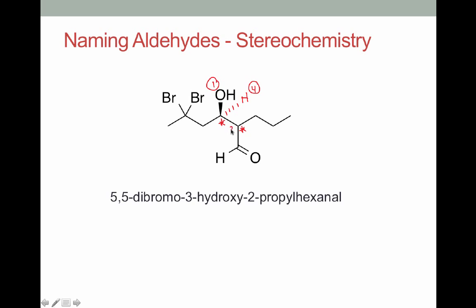We have this carbon versus that carbon. The carbon that has two carbons attached we'll make priority two, and the carbon that has one carbon attached we'll make priority three. With our priority four group pointed back, we draw our arrow from one to two to three — we're going around to the right, so that's R configuration. That's carbon three, and since there is more than one chiral center, we need to designate 3R in front of the name in parentheses. That way we can tell the reader the configuration at carbon three. Had we shown the configuration at carbon two, we could have included that in the name as well.